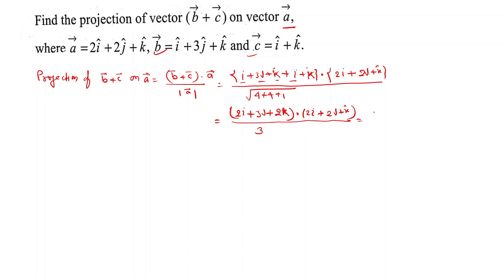That gives us 4 plus 6 plus 2, divided by 3, which is 12 by 3, equal to 4. Therefore, the projection of b plus c on vector a equals 4.